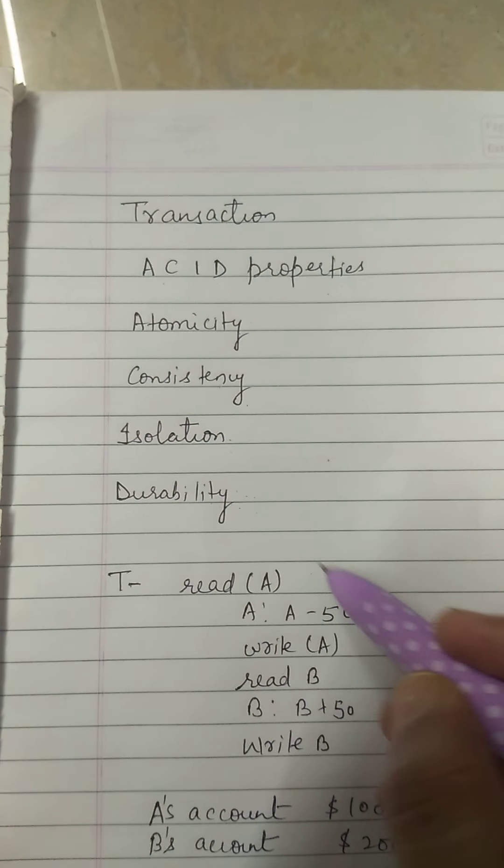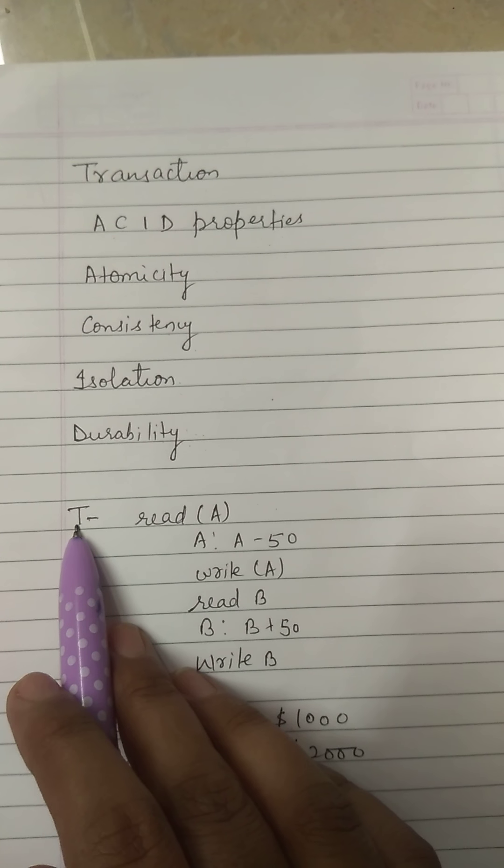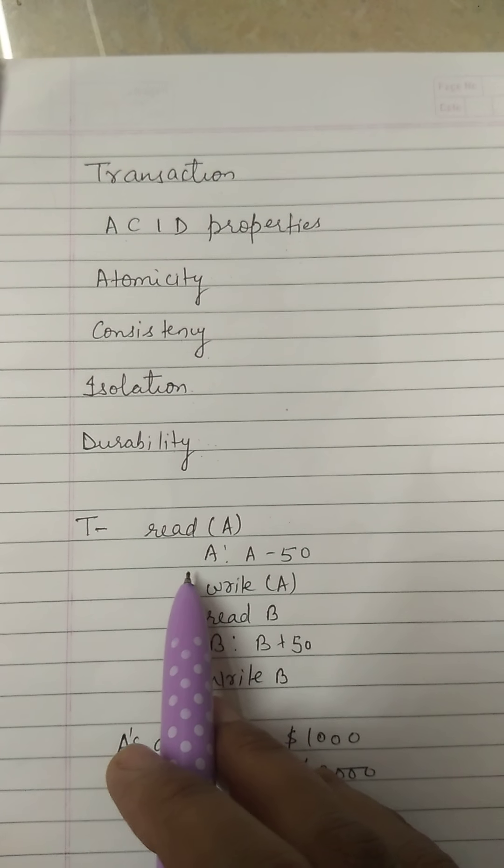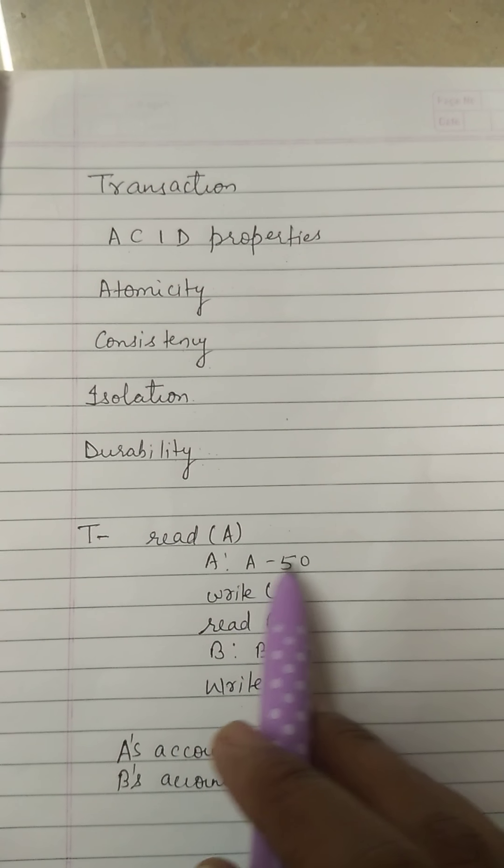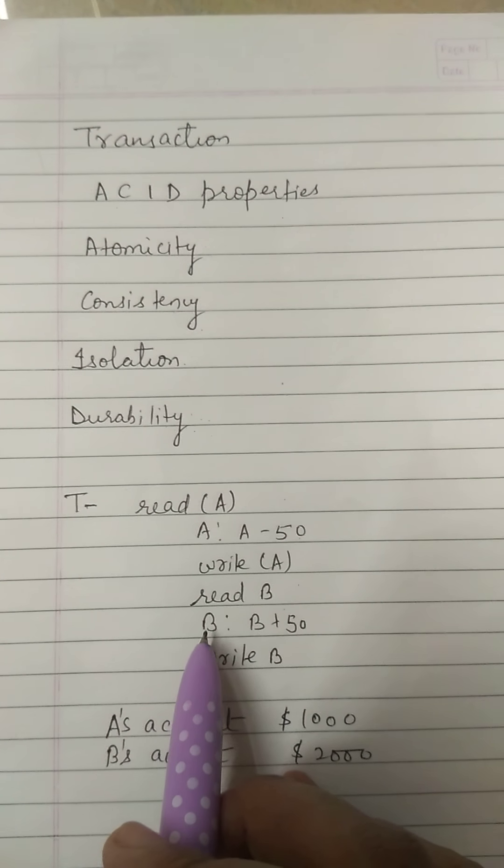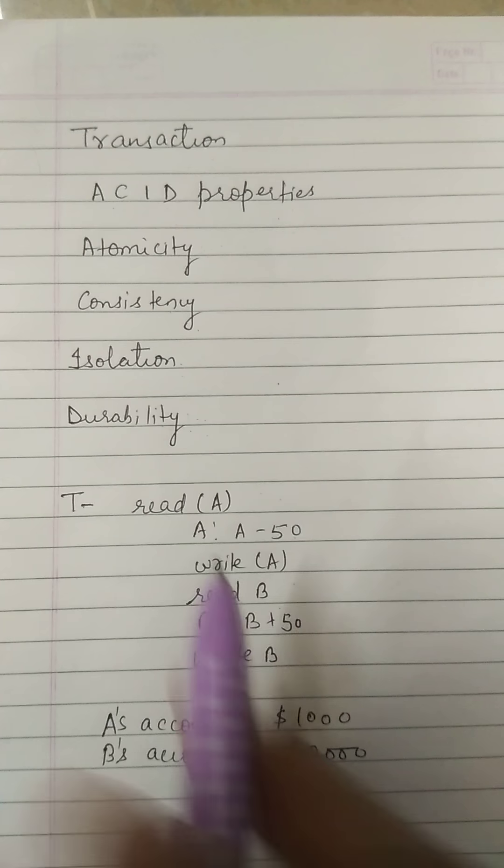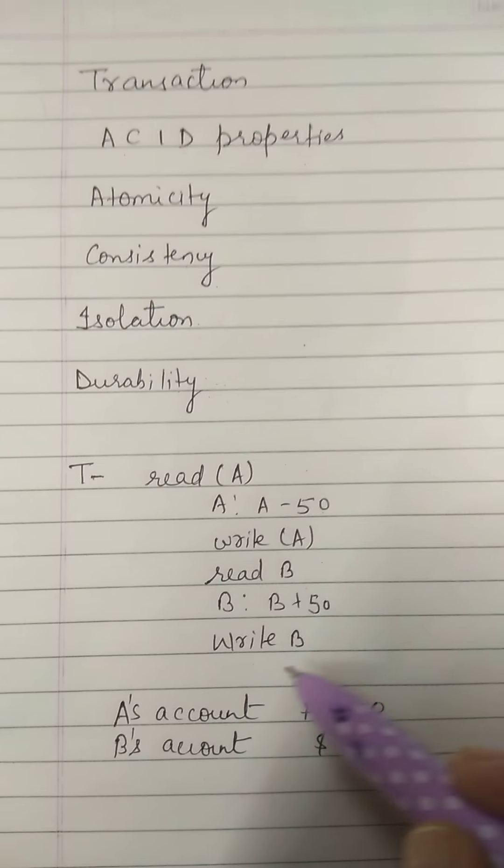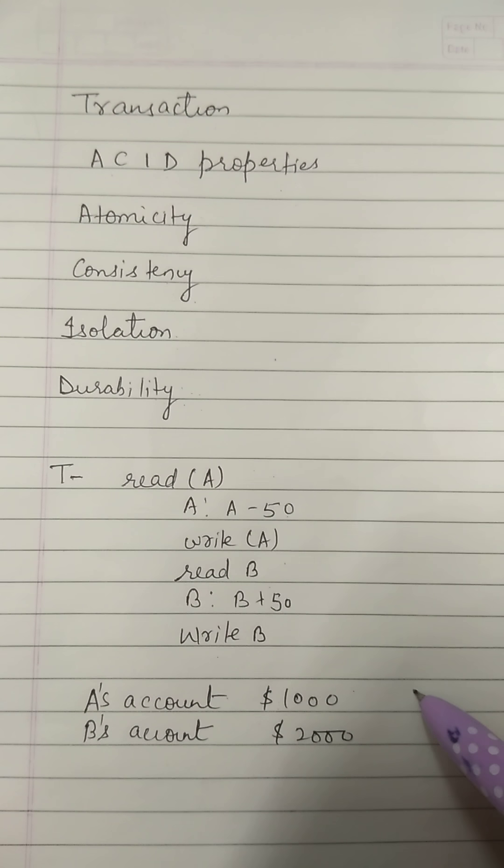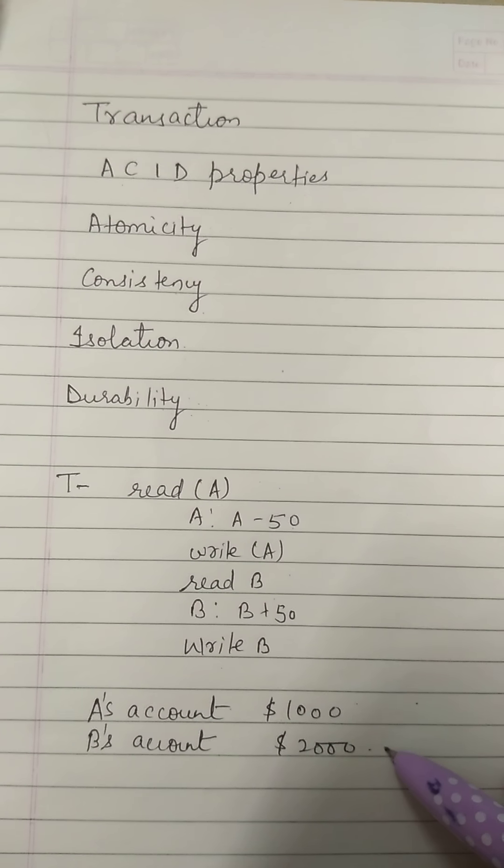Now we will take an example. Suppose there is a transaction T. In this we have some instructions like read A, A = A - 50, write A, read B, then B = B + 50, and write B. So now suppose customer A's account has $1000 and customer B's account has $2000 initially.